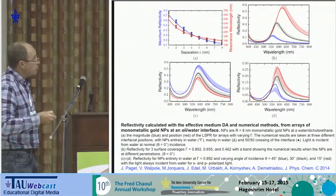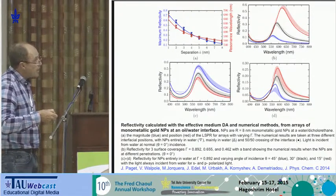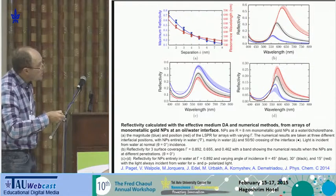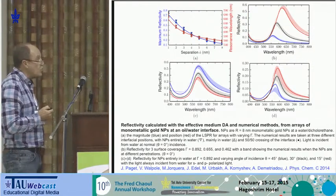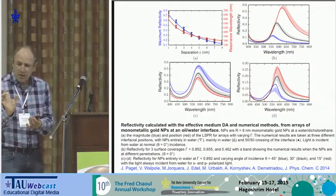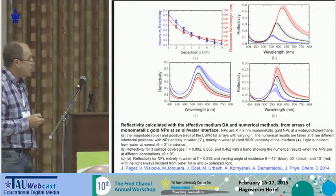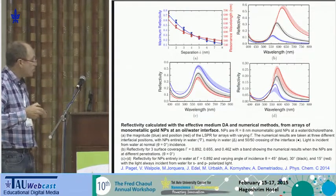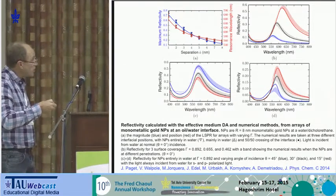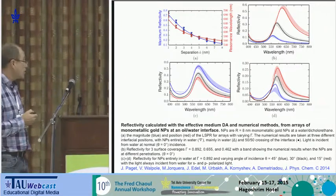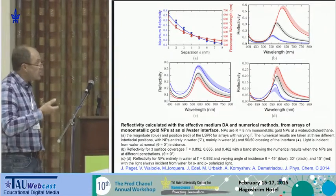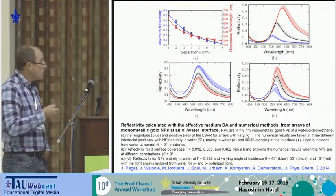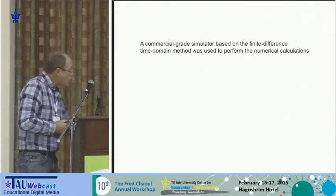You can see how reflection depends on wavelength. Curves show results of the dipole approximation for different coverages, and the broad lines are results of numerical calculations done for different locations of nanoparticles near the interface, for both S and P polarization. You can see that you can get quite high reflection from your nanoparticles. Very simple dipole approximation, which allows easy analysis of experimental results, works pretty well.